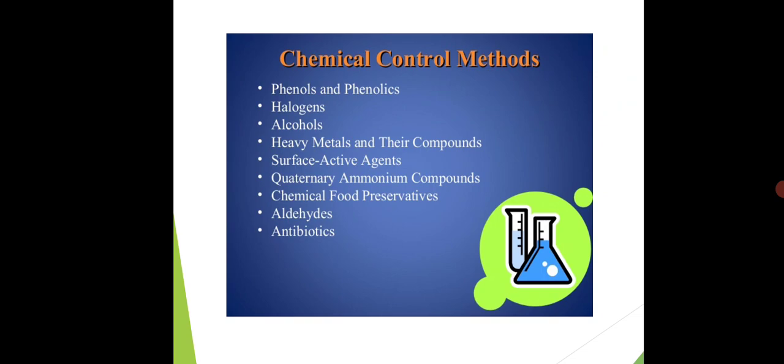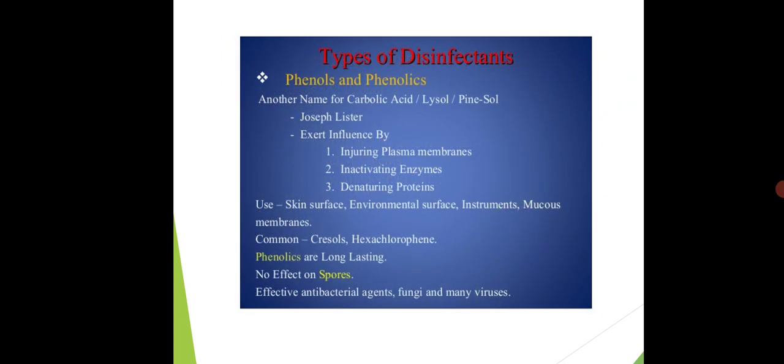The chemicals which are used for air sanitation are phenols and phenolics, halogens, alcohols, heavy metals and their compounds, surface-active agents, quaternary ammonium compounds, chemical food preservatives, aldehydes, and some antibiotics. In this lecture, we are going to focus on three methods: phenols and phenolics, halogens, and alcohols.